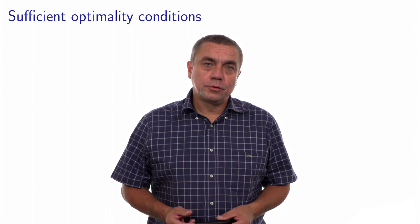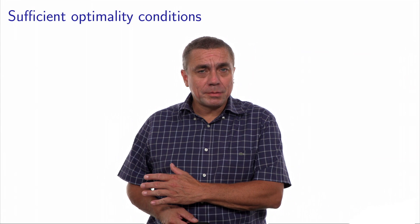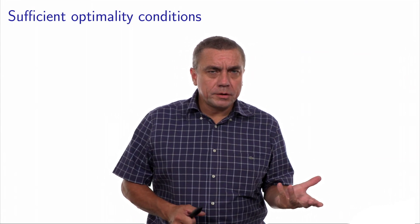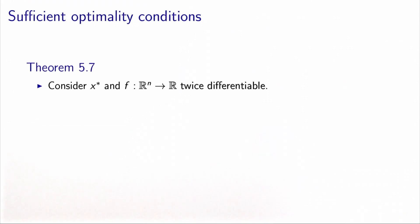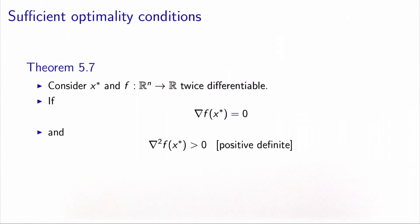The sufficient optimality conditions are very similar to the necessary optimality conditions. Unlike in the previous video, we remind here classical results from analysis that are relevant in the context of optimization. The sufficient optimality conditions, denoted as Theorem 5.7 in the book, say the following: consider a point x* and a function f which is twice differentiable. If the first derivative is equal to zero at x*, and if the second derivative is positive definite — meaning all its eigenvalues are strictly positive — these are sufficient conditions for x* to be a local minimum of f.